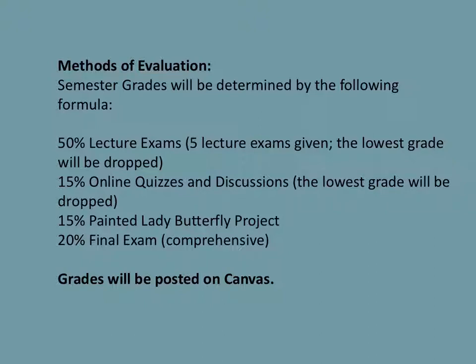How will you be evaluated for this class? The grades will be determined by the following formula: fifty percent will be from lecture exams — there will be five lecture exams given and the lowest grade will be dropped. Fifteen percent of your grade will be from online quizzes and discussions, and the lowest grade there will also be dropped. Fifteen percent will be from a project called the Painted Lady Butterfly Project. And twenty percent is from a comprehensive final exam. All grades will be posted on Canvas.